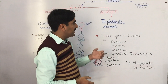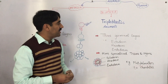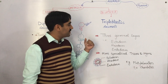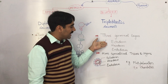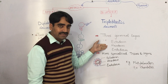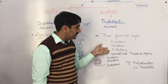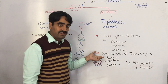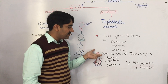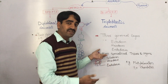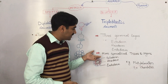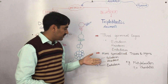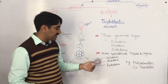The other group is the triploblastic animals. Triploblastic animals consist of three germinal layers: the ectoderm, the mesoderm — a new layer — and the endoderm. These layers are specialized and develop into further organs and organ systems, making them more specialized compared to diploblastic animals.